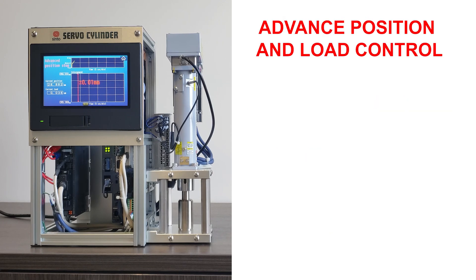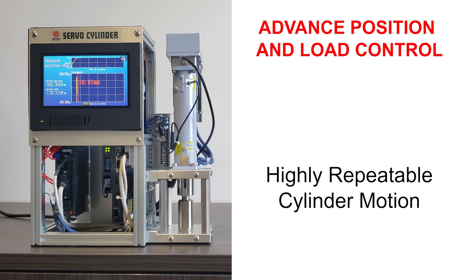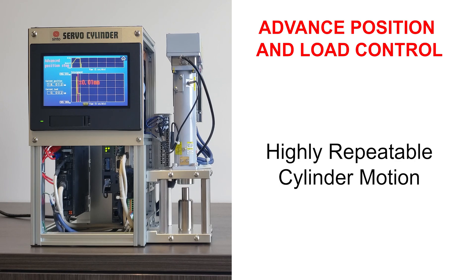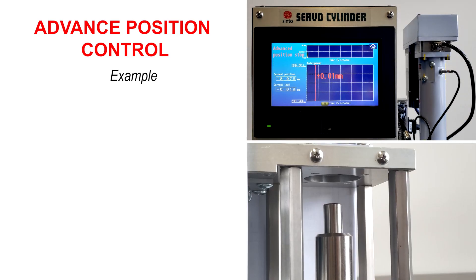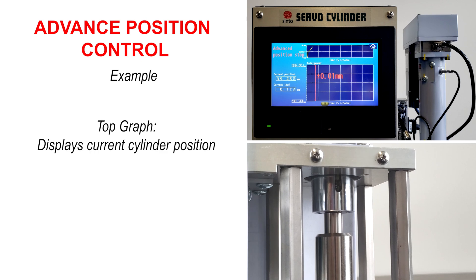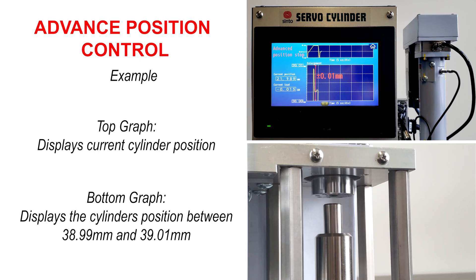The first feature, advanced position and load control, produces highly repeatable cylinder motion. The following is an example of advanced position control. The top graph will display the current cylinder position, while the bottom graph displays the cylinder's position between 38.99 mm and 39.01 mm.